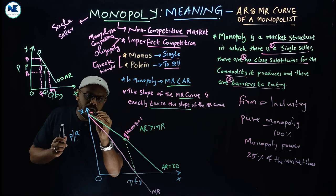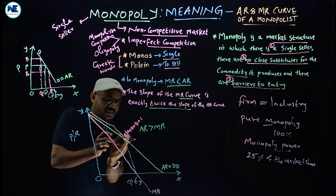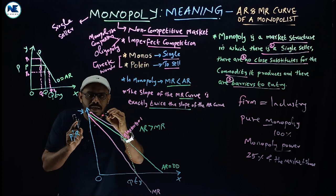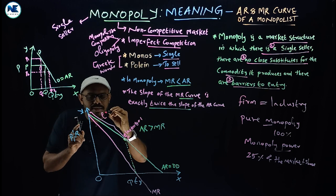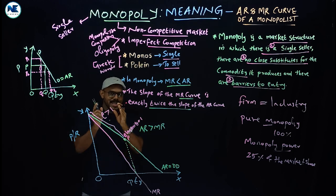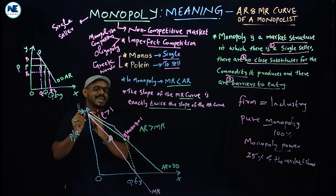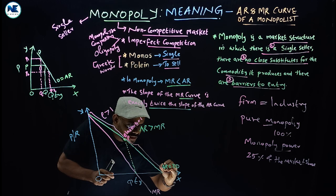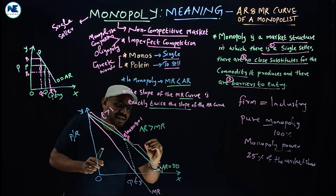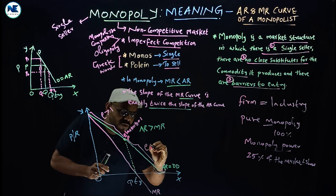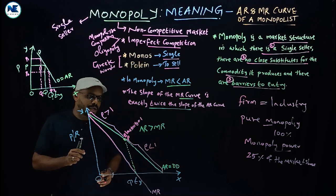At the point where elasticity equals 1, that is the average revenue at the middle. In the left side of the middle part, elasticity is greater than 1. In the right side of the middle part, elasticity will be less than 1.